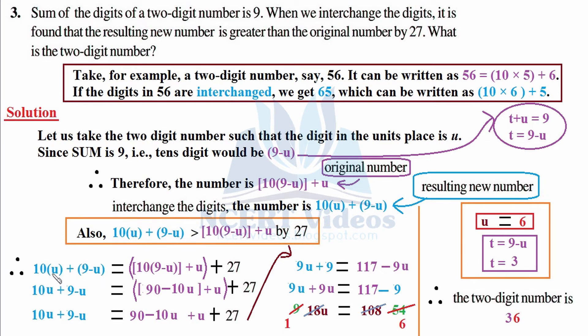The greater number 10u + 9 - u equals the original number 10(9-u) + u plus 27. This is a balanced equation. The ultimate aim of equations is to balance left hand side with right hand side. This is the required equation which we are going to solve.